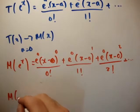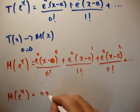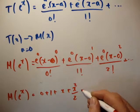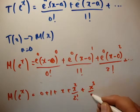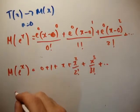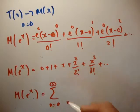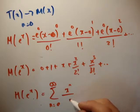Or if you're going to rewrite that, the McLaren series of e to the x is equal to 0 plus 1 plus x plus x squared over 2 plus x cubed over 2 factorial, 3 factorial, and so on. And if you want to put that in a nice compact fashion, you can say the McLaren series of e to the x is the infinite series from n is equal to 0 to infinity of x to the n divided by n factorial.